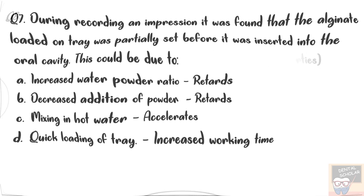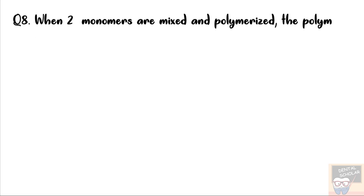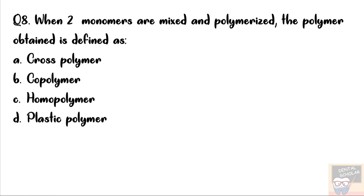Let's now go to question number 8. When two monomers are mixed and polymerized, the polymer obtained is defined as — the options are: cross polymer, copolymer, homopolymer, and plastic polymer.